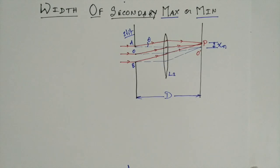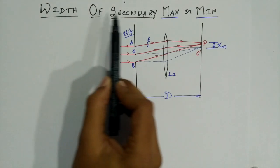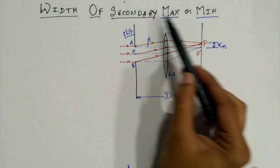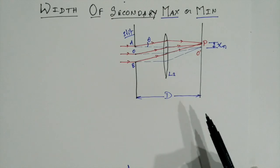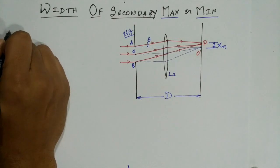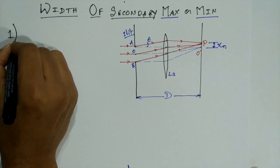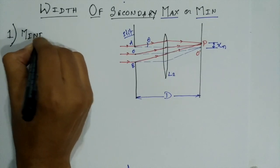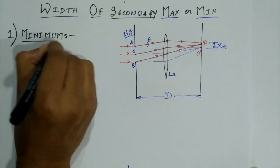In this video we will be continuing the derivations for width of secondary maximum or minimum for Fraunhofer diffraction. I have already drawn this diagram — this is just a smaller version to remind you of it. First, we will be deriving for secondary minimum.